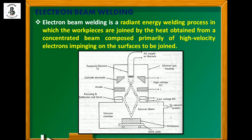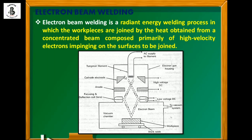For the electrode material, tungsten is used. This tungsten filament is connected with an AC power source. Once the AC power supply is applied to the tungsten filament, it emits electrons. These electrons pass through a cathode electrode and anode, which are connected to a high-voltage DC power supply. The potential difference accelerates the emitted electrons from cathode towards the anode.